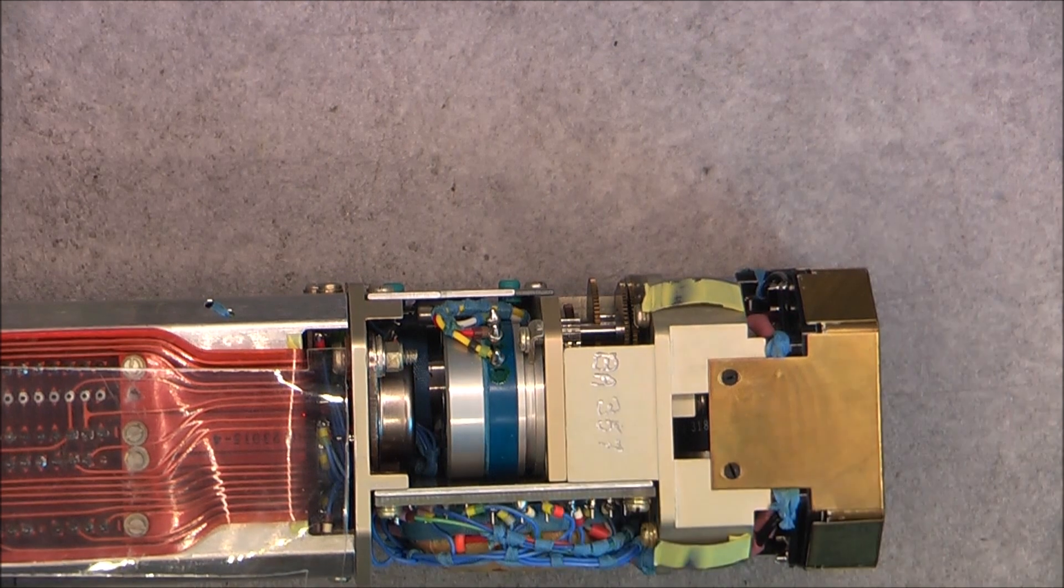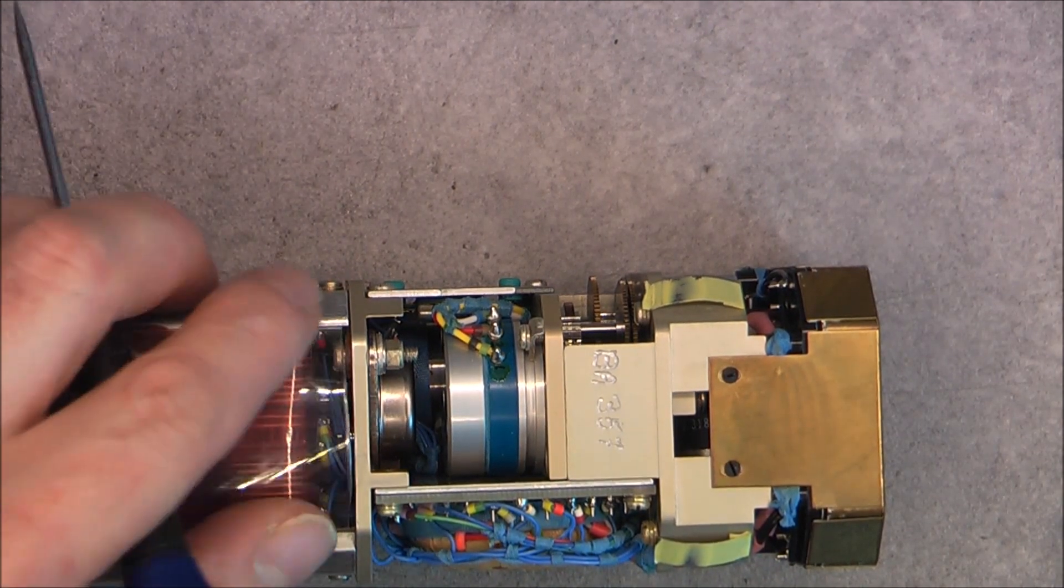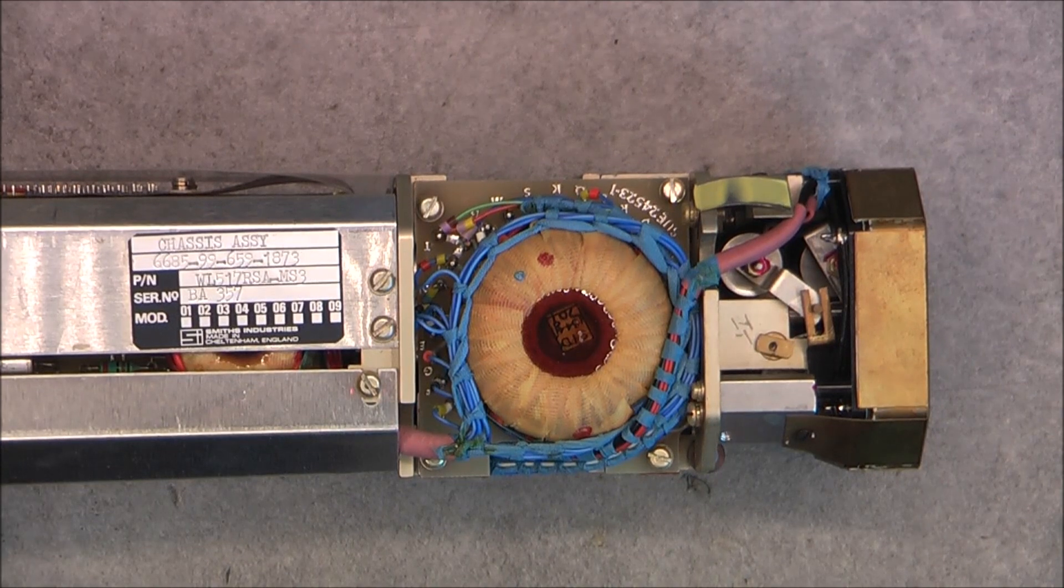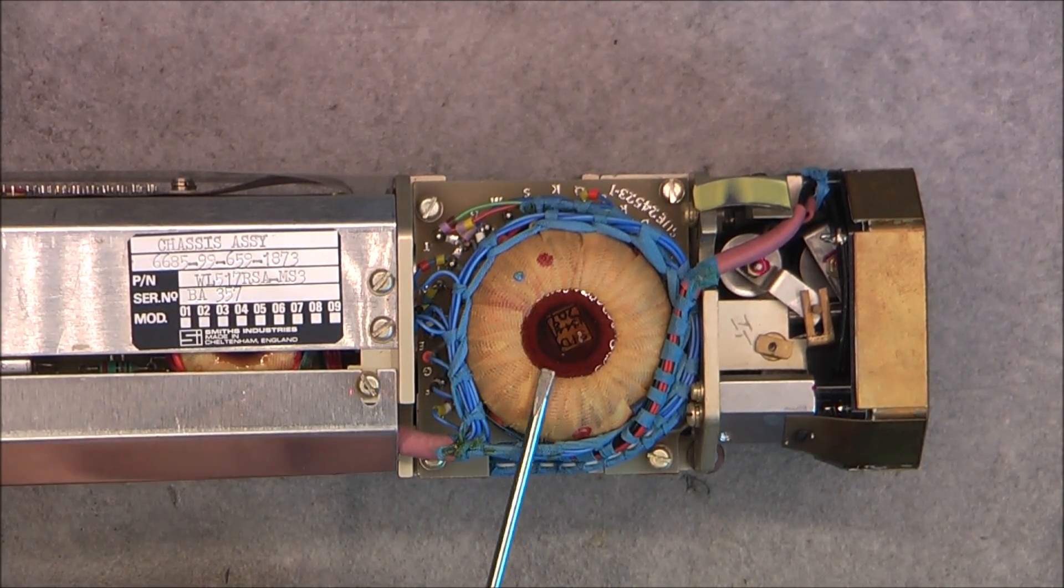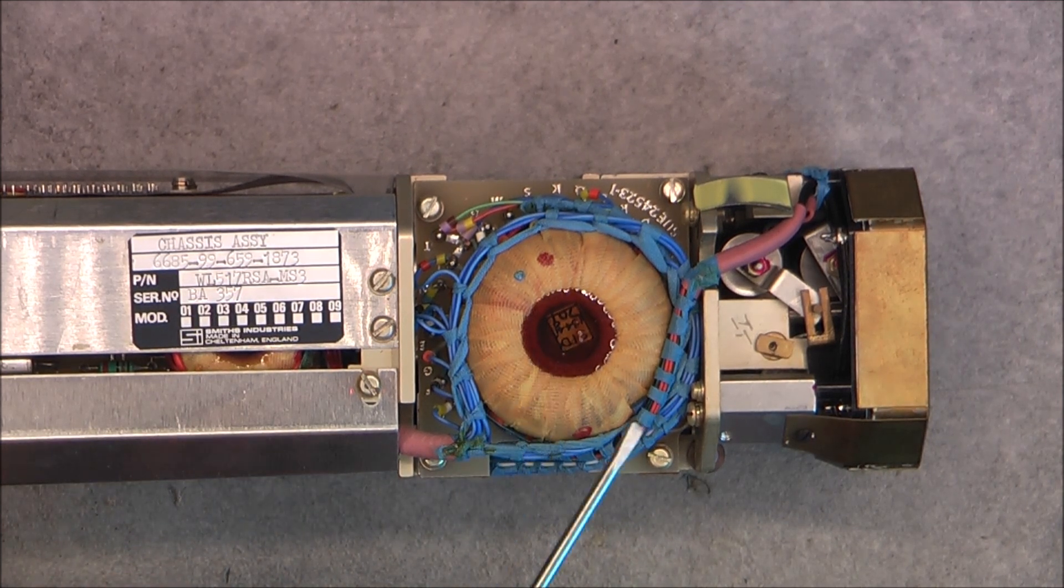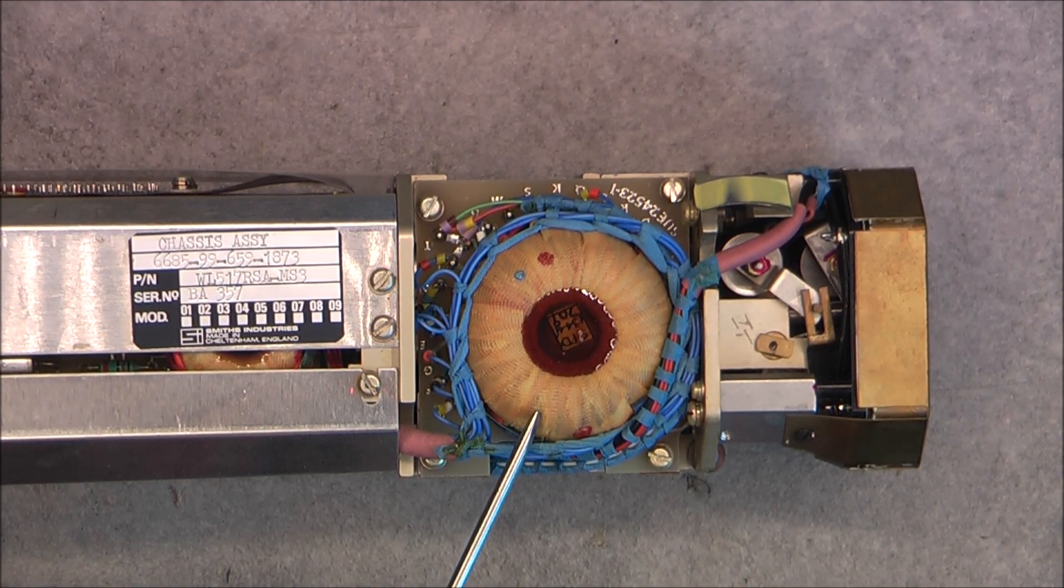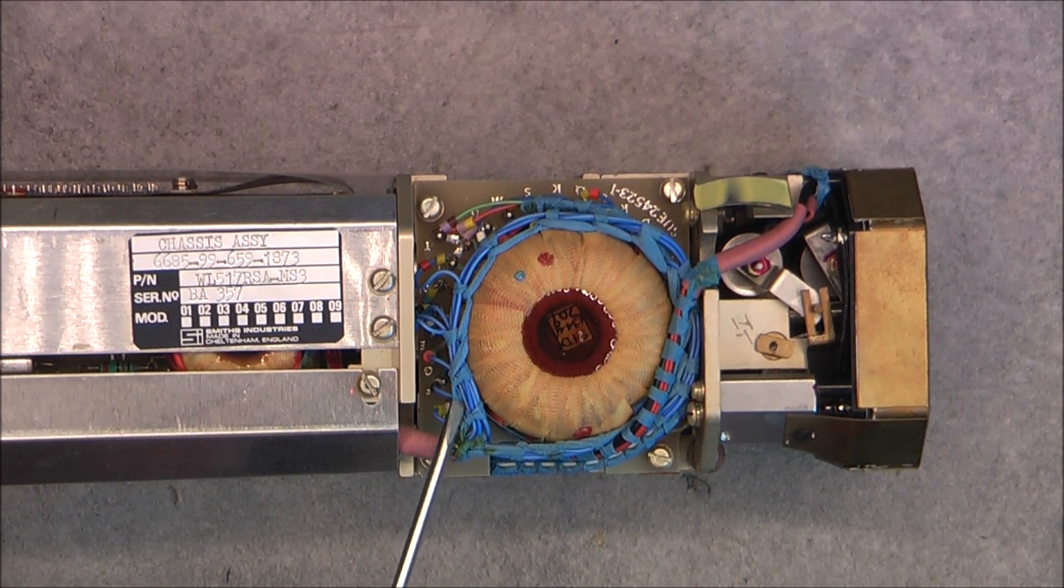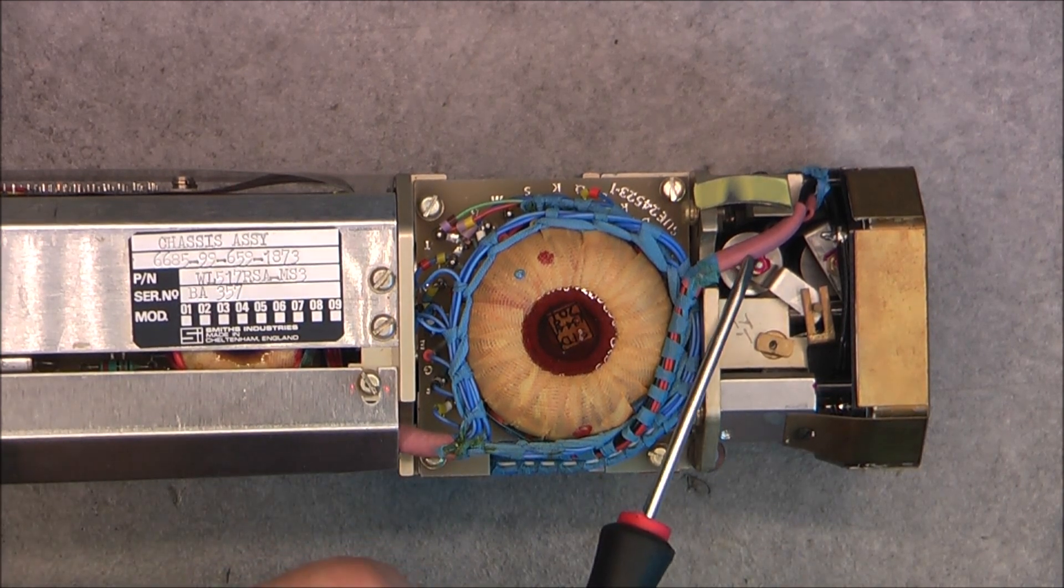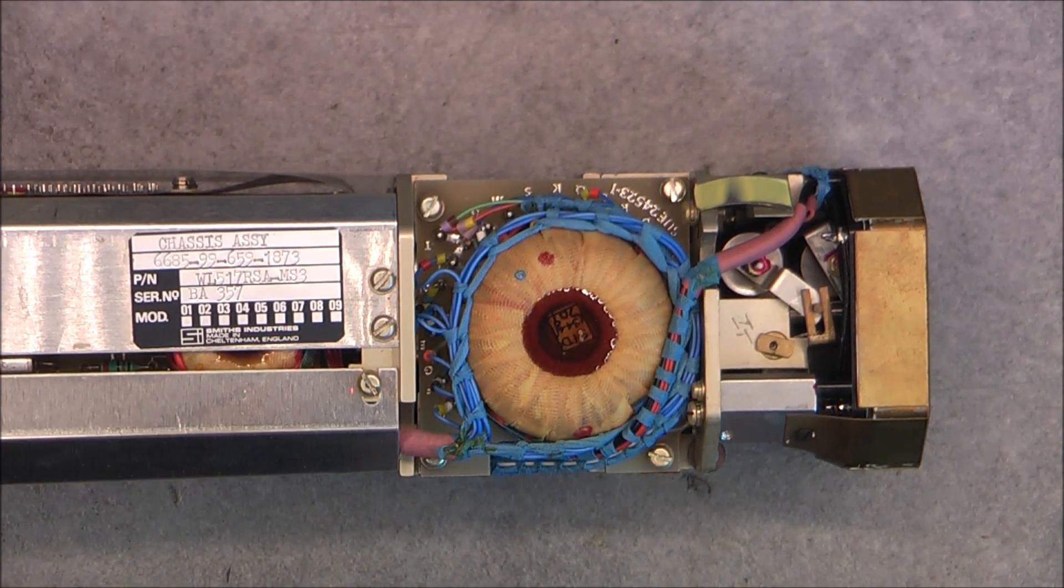There's feedback potentiometer here. I can see a power transistor here clamped on the structural piece. And here what seems to be maybe power supply related, a toroidal transformer with a little sticker in the middle which is embedded in epoxy. A typical British military electronics wire harness with at the same time the pink heat shrink and the blue lacing tape. Very typical.